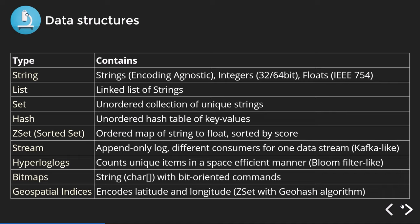HyperLogLog counts unique items in a space-efficient manner — it's kind of like a bloom filter. Bitmaps are geared towards storing image data and RGB-formatted bytes. Geospatial indices encode latitude and longitude data — it is essentially a sorted set with a geohash algorithm and is the latest addition to the data structures.